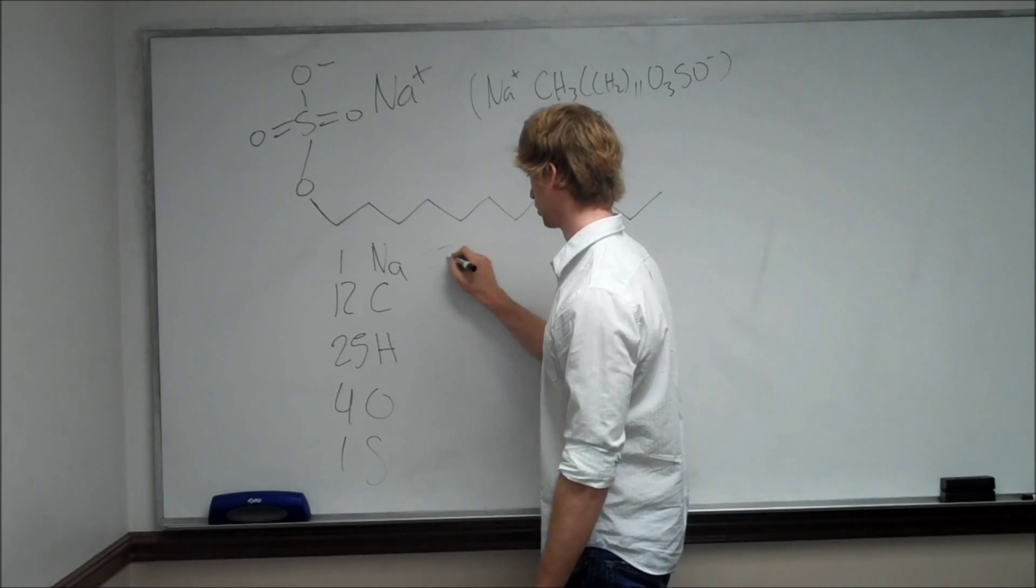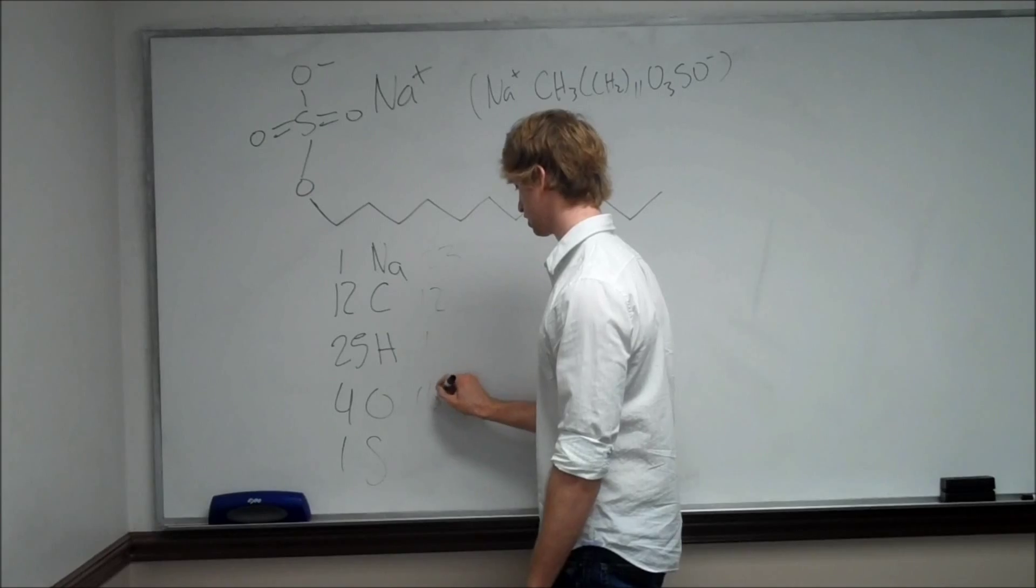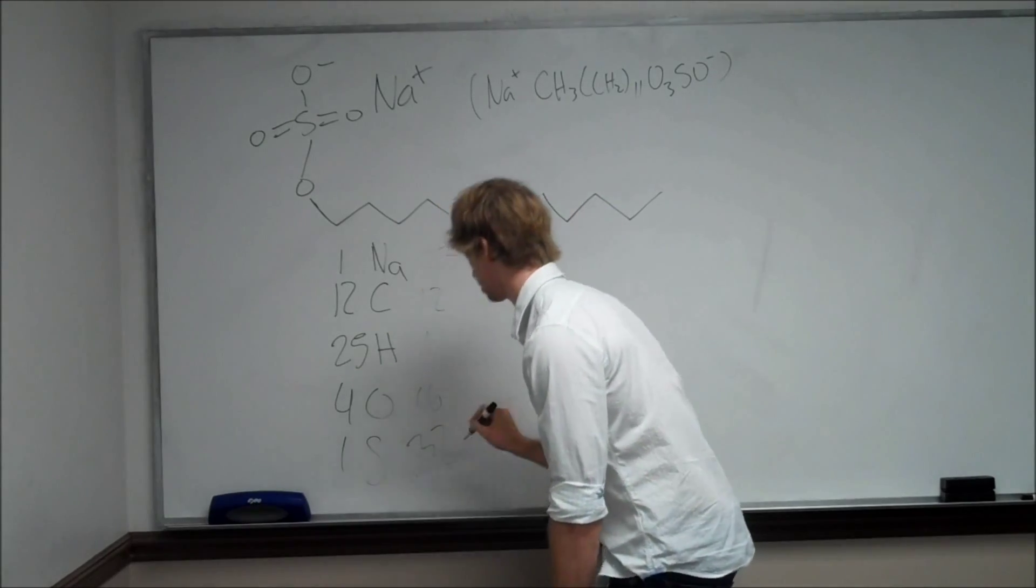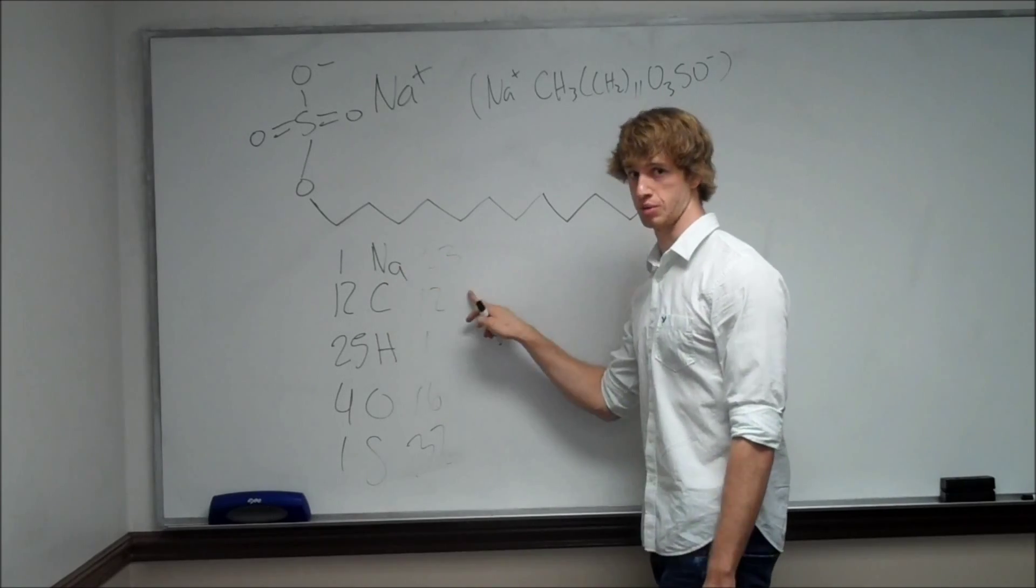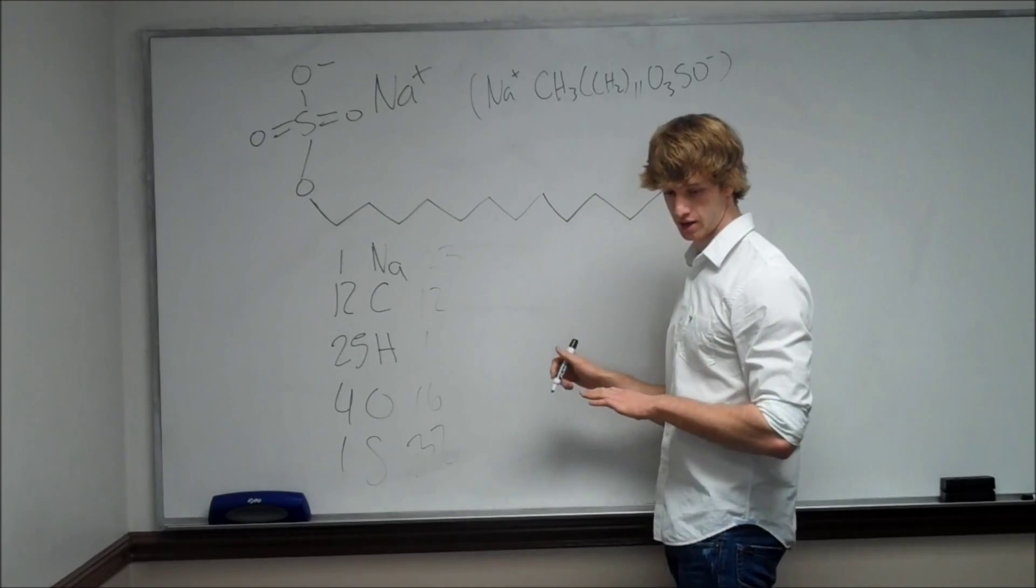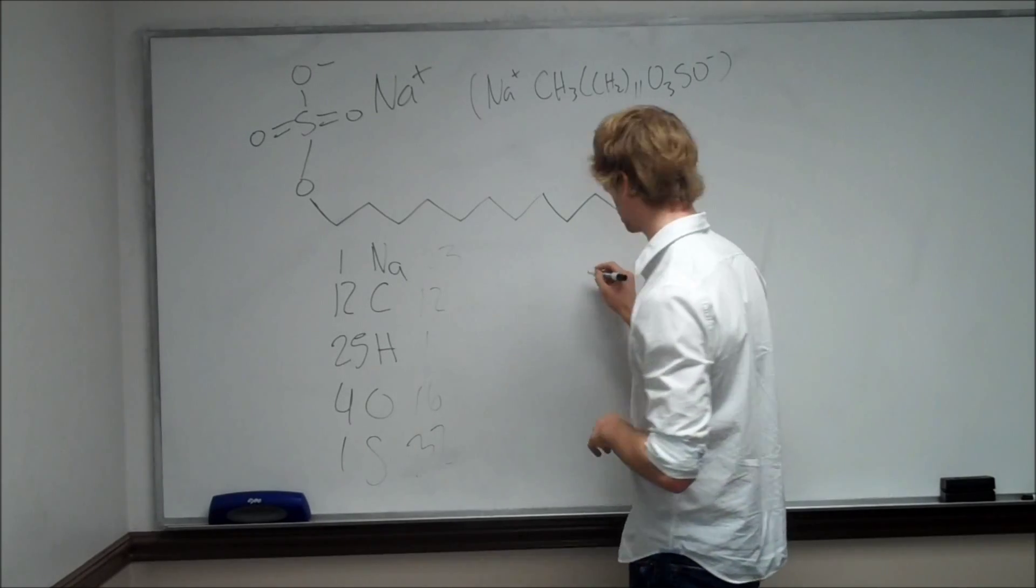So sodium is about 23, carbon is about 12, hydrogen is 1, oxygen is 16, sulfur is about 32. Then we need to multiply all these together and add them up. So 1 times 23 plus 12 times 12, and we get that should come out to about 288.